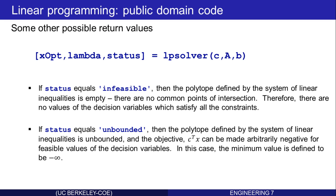If status equals 'unbounded', then it means the polytope defined by the system of linear inequalities is unbounded. There are some directions where X can grow arbitrarily large, and in that direction, C transpose X can be made arbitrarily negative. In this case, the minimum value is defined to be negative infinity.